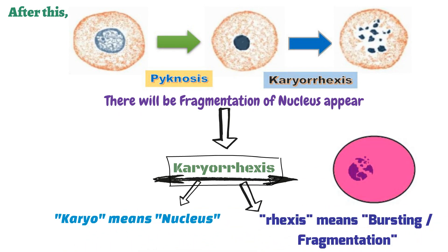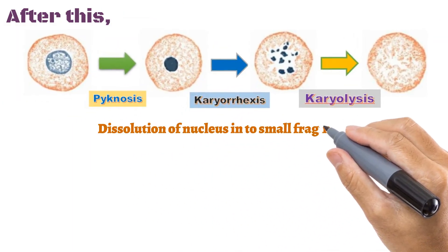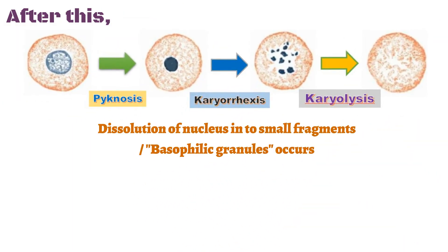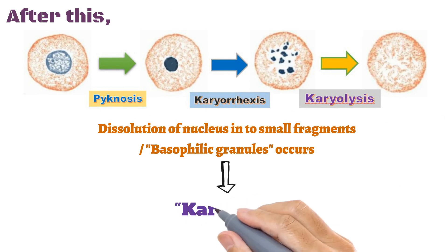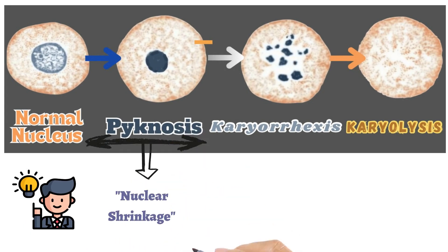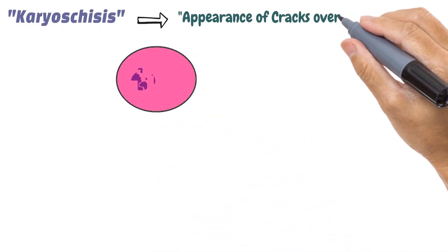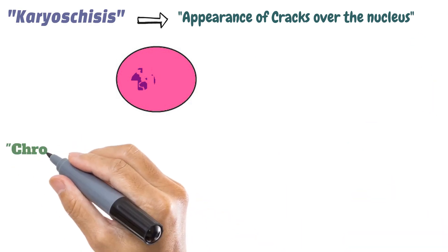After karyorrhexis, dissolution of the nucleus into small fragments or basophilic granules occurs, and this process is known as karyolysis. In short: pyknosis means nuclear shrinkage, followed by karyorrhexis meaning nuclear fragmentation, followed by karyolysis meaning nuclear fading. Next is karyostasis, meaning appearance of cracks in the nucleus, and last is chromatolysis, meaning lysis of chromatin material.